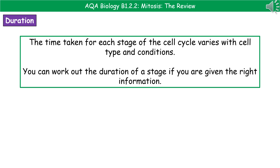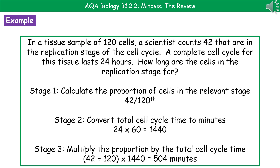When considering how long the cell cycle actually takes, it's not one fixed value because it varies with different cell types and conditions. However, if you're given the right information, you can work out the duration of a stage. For example: in a tissue sample of 120 cells, a scientist counts 42 that are in the replication stage of the cell cycle. A complete cell cycle for this tissue lasts 24 hours. How long are the cells in the replication stage for?